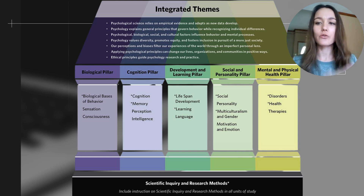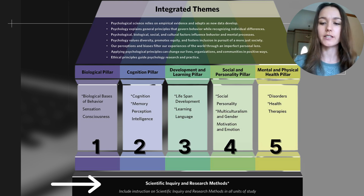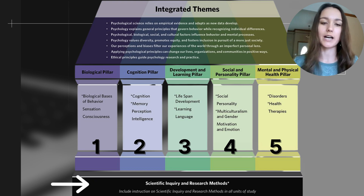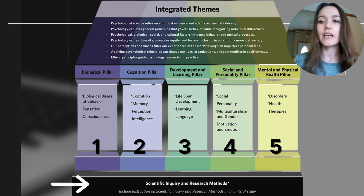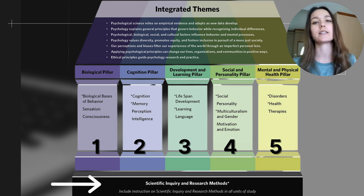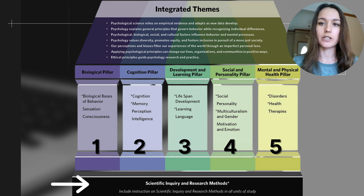The course as a whole is organized into five different pillars, which you can see here. These pillars represent our five different units. This video is unit zero, which focuses on the foundation — scientific inquiry and research methods. It's really important before we jump into unit one that we understand the scientific process: how researchers collect data, how to interpret that data, and we'll draw on those skills throughout the entire school year.